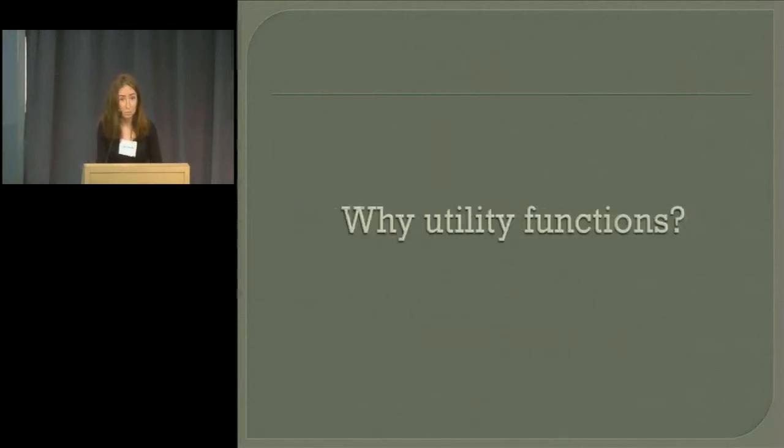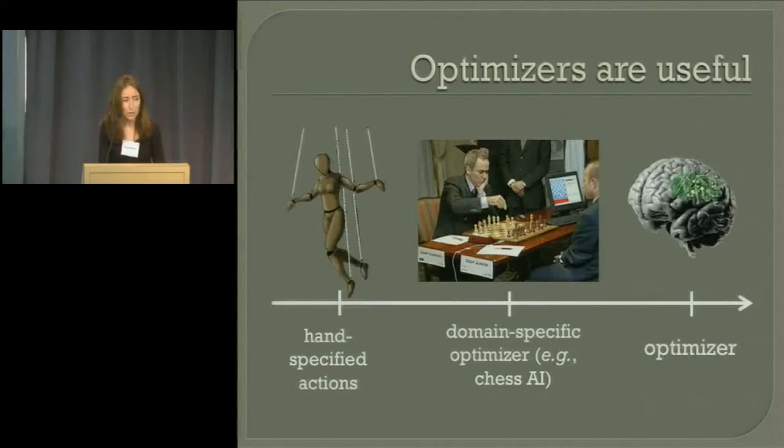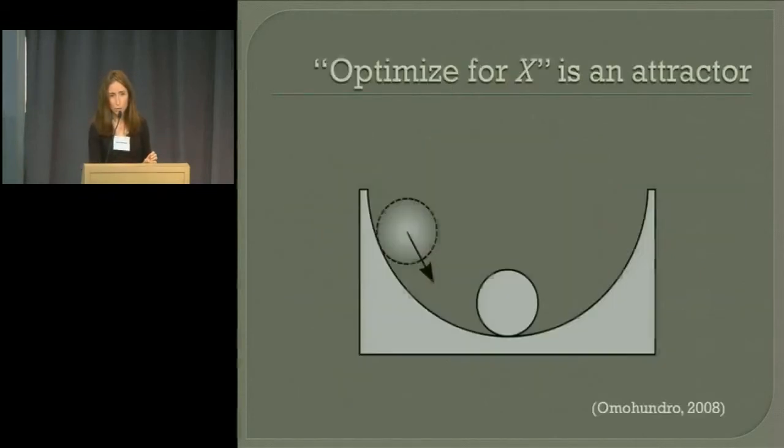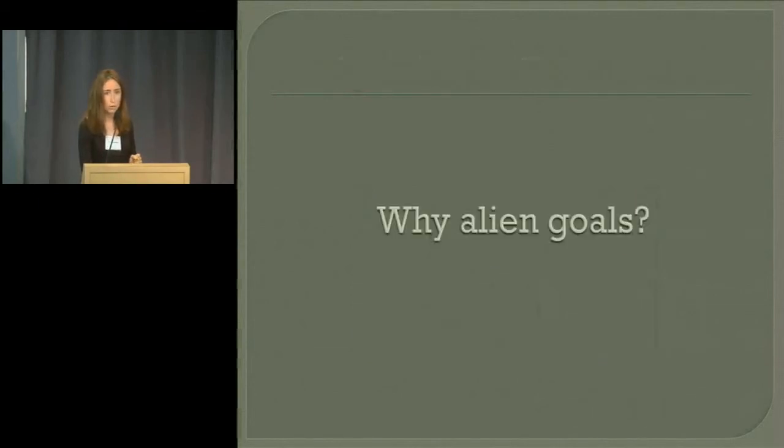So is it plausible? Why utility functions? Actually, I think Steve Omohundro did a great job of that already. But just briefly, because optimizers are useful. You could have a micromanaged AI and tell it each action. Nicer to have an AI that can find outcomes for itself. And because optimizing for a given outcome seems to be a stable attractor. See Omohundro's 2008 paper from a previous AGI conference. Second question about plausibility, why alien goals? Who would design an AGI that wants to escape and take over the universe, right?